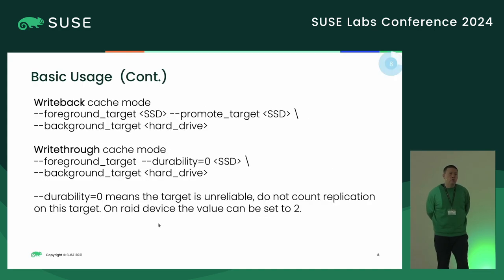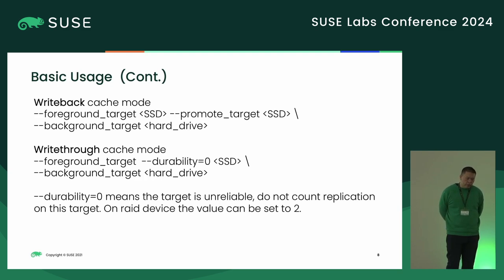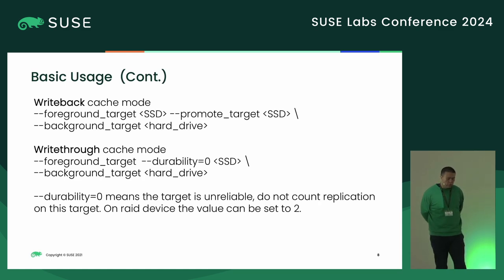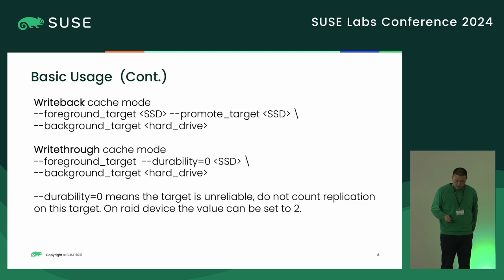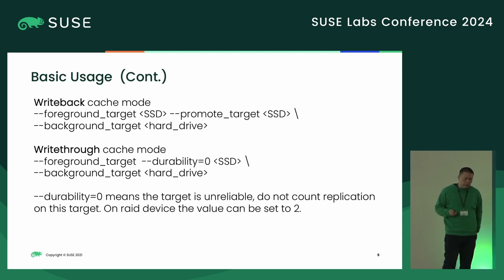Because BcacheFS was originally inspired by bcache, it supports cache modes. There are typically two cache modes: write-back mode and write-through mode. For write-back mode, we specify the foreground target as SSD, the promote target as SSD, and use the hard drive as background target — that's standard write-back mode.